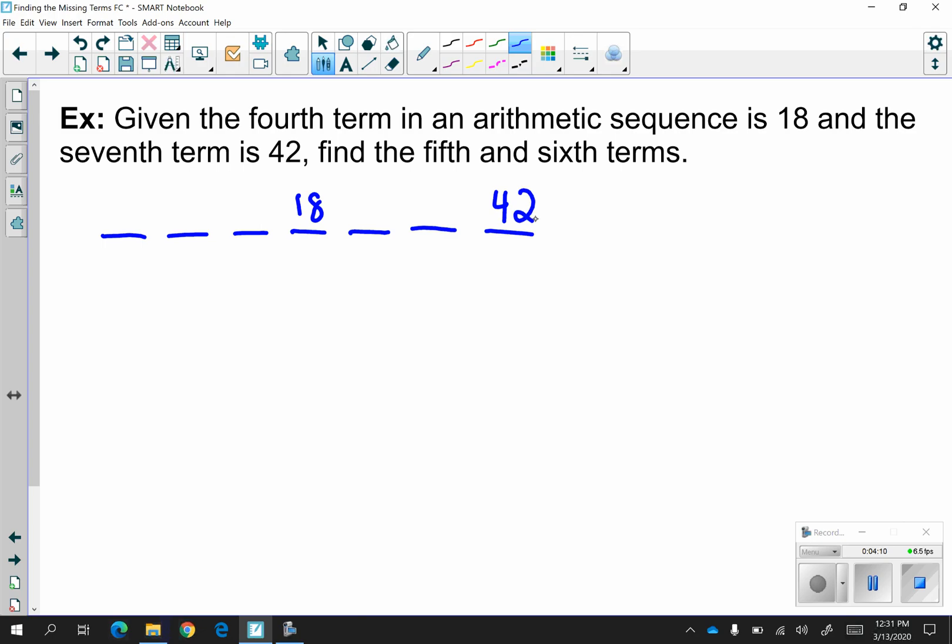Now I don't really care what happened before this, from terms 1 to 3. I just care about how to get from 18 to 42. So I'm making 1, 2, 3 jumps to get from the fourth term to the seventh term. So I'm going to have 18 plus 3 jumps is equal to 42. And then I'm going to solve. So 3d is equal to 24. And d has to equal 8.